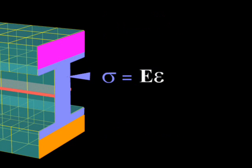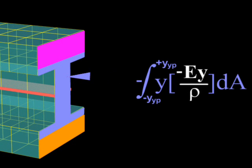In the elastic region where stress equals E times strain, or minus E times y over rho, the moment contributed by this area equals the integral of y times E times y over rho times dA.